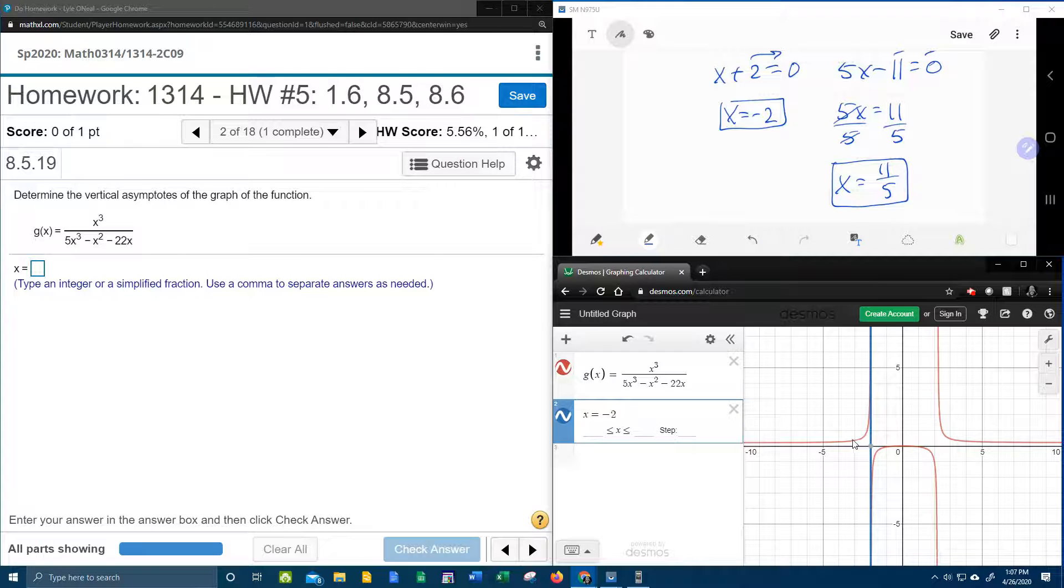And do you see how that vertical line fits nicely right in there in the red graph? So the graph here, it's approaching, but never touching. So that vertical asymptote looks correct.